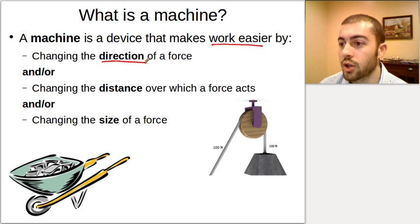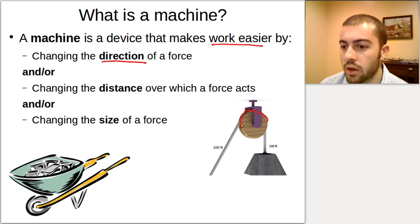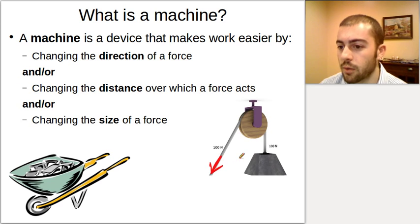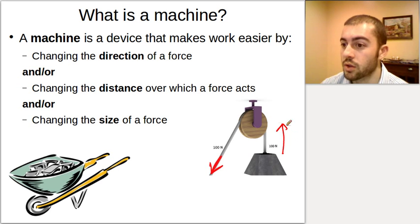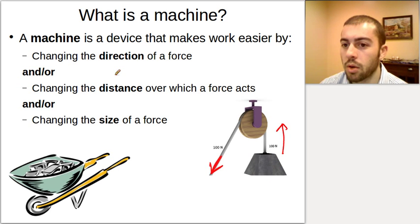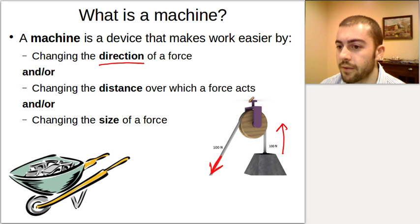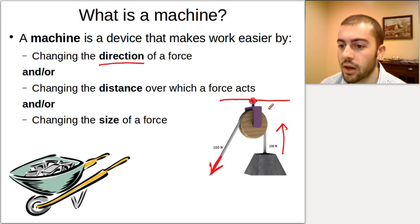A machine can change the direction of a force that we put into it. A good example of that is a pulley — a wheel with a rope strung around it. If we pull downwards on one side of the rope, the other side goes upwards. So we've exerted a downward force, but the pulley changed the direction to make an upward force on the other side. This is called a fixed pulley because it attaches to a ceiling or something of that nature.